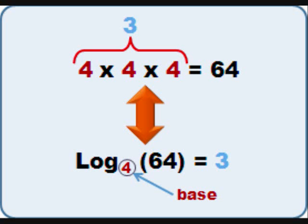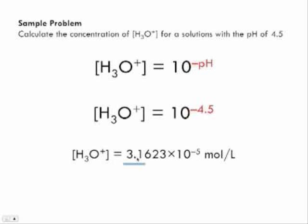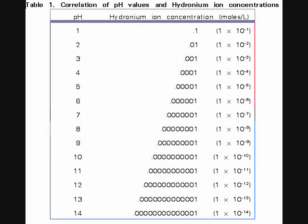pH is measured on a logarithmic scale. Here is an image explaining how logarithms work, for those of you not familiar. pH shows the concentration of hydronium ions in a solution as the formula 10 to the power of the negative pH. The log base 10 of the negative pH gives the concentration.